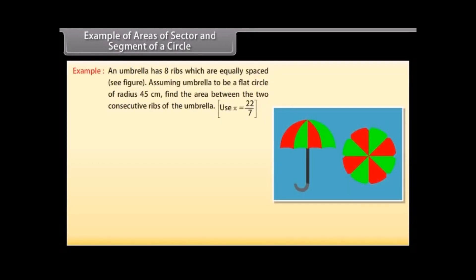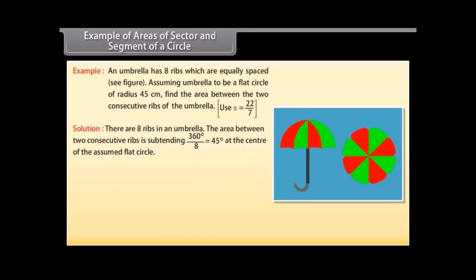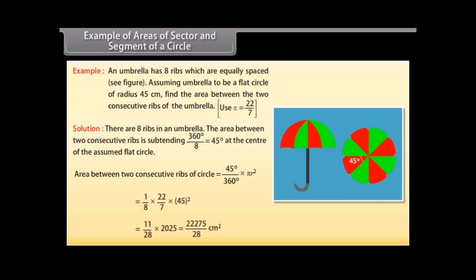Example: An umbrella has 8 ribs which are equally spaced. Assuming the umbrella to be a flat circle of radius 45cm, find the area between two consecutive ribs. Use π as 22/7. Solution: There are 8 ribs, so the area between two consecutive ribs subtends 360°/8 equals 45° at the center. Area between two consecutive ribs equals (45°/360°) × πR², which equals 22,275/28 cm².